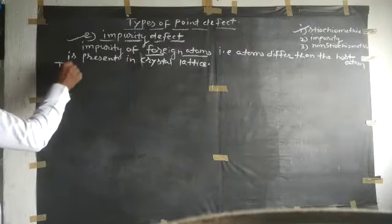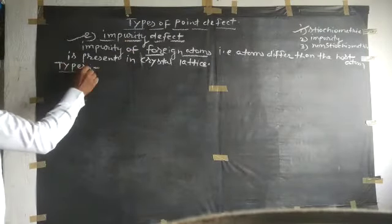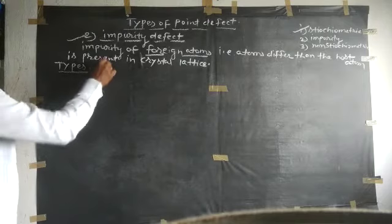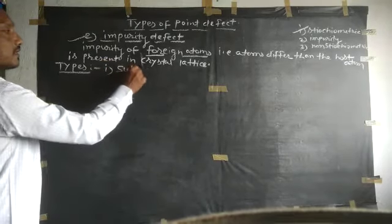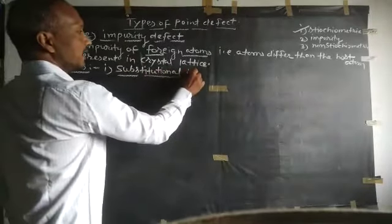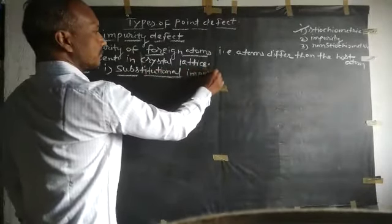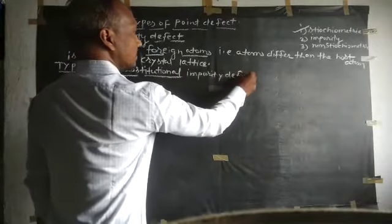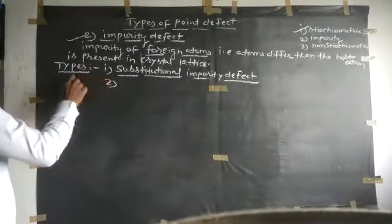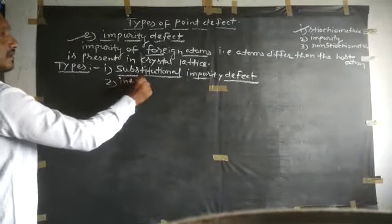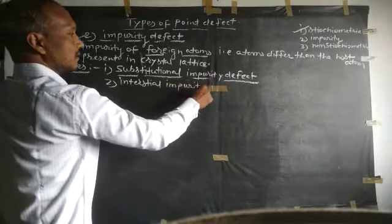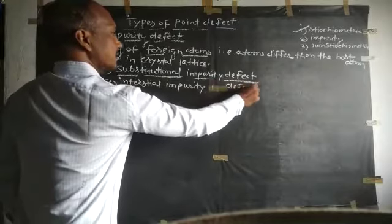Now, the types of impurity defect. There are two types of impurity defect. The first type is called the substitutional impurity defect, and the second type is the interstitial impurity defect.